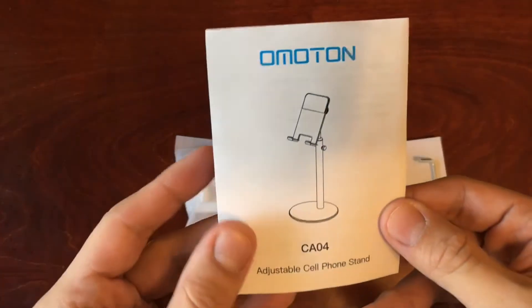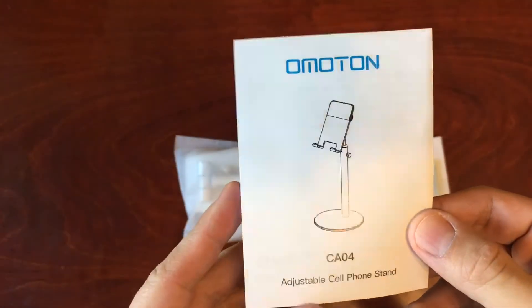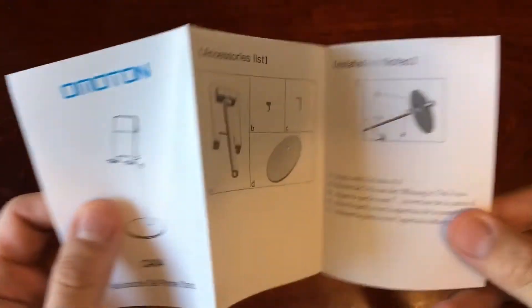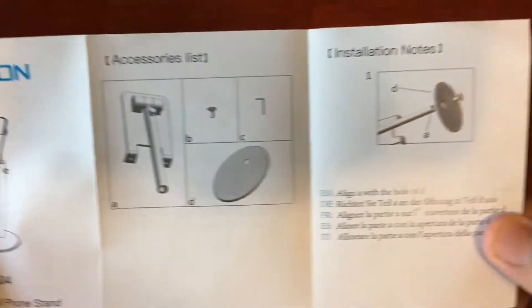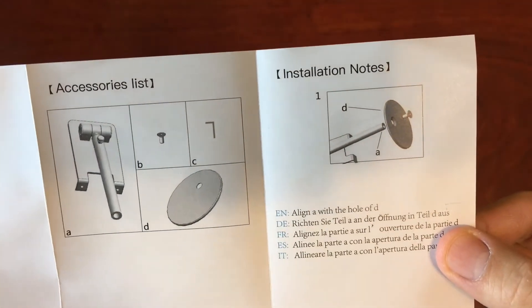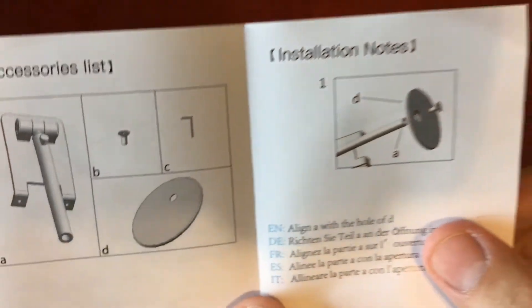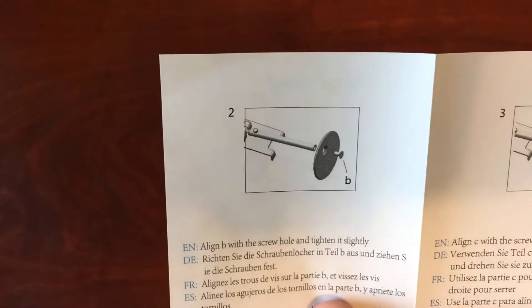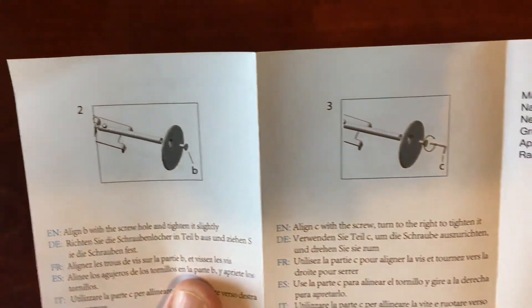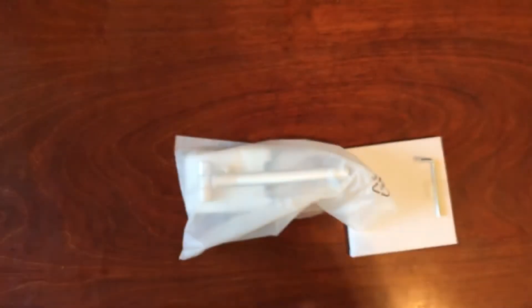And then we also have a manual. So CA04 adjustable cell phone stand and then the accessories list, install instructions, as well as some installation notes. Just need to align A with the hole in D. Okay it should be pretty straightforward. All right put that to the side.